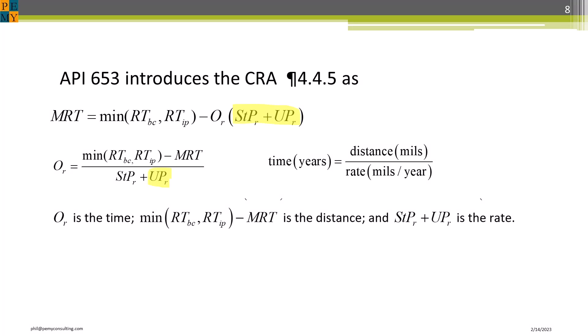This formula comes directly out of API 653. It can be rearranged to compute O sub R, the length of the next internal interval. And really, the simple speed, distance, time formula for constant velocity is all that it is. Notice the yellow highlighting. There are two problems. The first is summing the top side and bottom side corrosion rates. The second is associated directly with computing the bottom side corrosion rate.